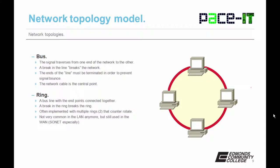Kind of related to the bus is the ring — it's a bus line with the endpoints connected together. A break in the ring breaks the ring. In a ring topology, it's common to use two rings that counter-rotate. This safeguards against a break in one ring bringing down the whole network. Ring topologies are not very common in the LAN anymore, but they're still used in the wide area network, especially when SONET or SDH is used.